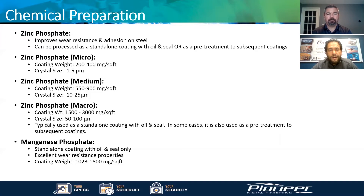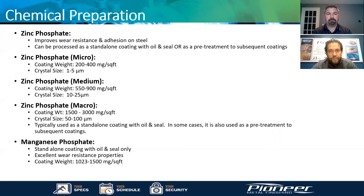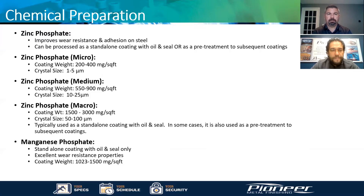The macro phosphate has our largest crystal size and largest deposit, going from 1500 to 3000 milligrams per square feet and a crystal size from 50 to 100 microns. This is not recommended for bonding rubber into steel because the crystal size is way too big, and when you're doing pull tests the crystal size will break.